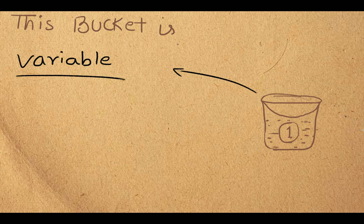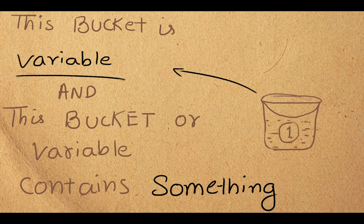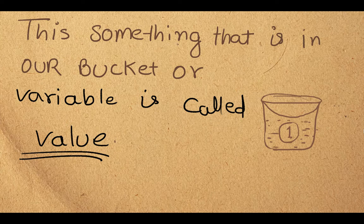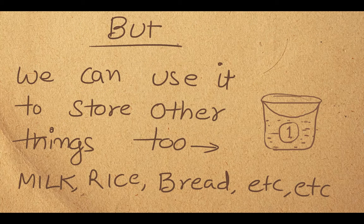Let's simplify it further. This bucket, or this box, is a variable. It has a name, it has some content — let's say water — and the type of that content or value is liquid. Whatever is placed inside this bucket is called its value: the content, the data that we assign to that bucket.